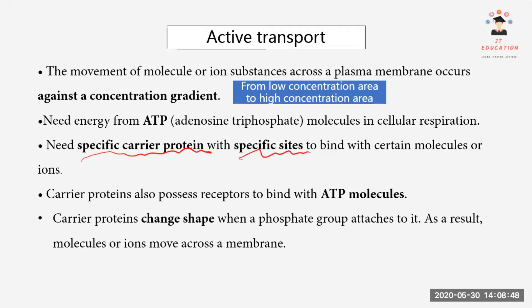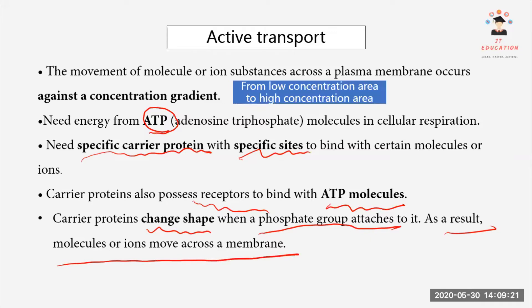The carrier protein has a specific site to bind with certain molecules or ions, and also has a receptor to bind with ATP. The carrier protein can change shape when a phosphate group attaches to it. That phosphate group comes from ATP — ATP gives its phosphate group to the carrier protein, and as a result the carrier protein changes shape, moving molecules or ions across the plasma membrane.